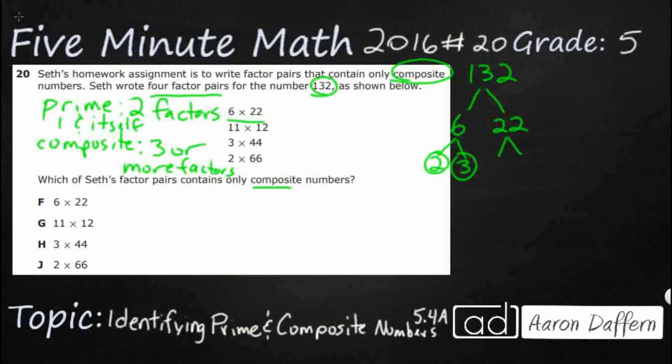22, well that's even. Let's break it up. That's 2 times 11. I know 2 is prime and 11. Well the only way to get to 11 is 1 times 11. That's also prime. So I'm done here.